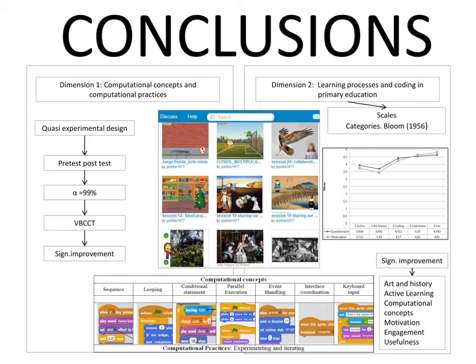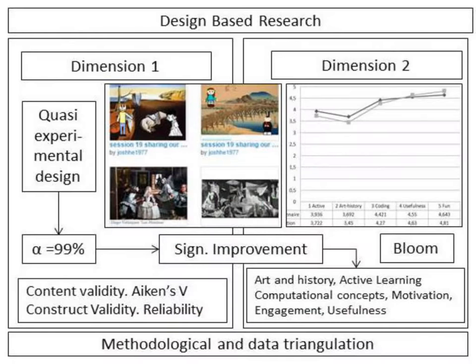Finding 3: Perceived usefulness in this practice and the computational concepts address obtaining considerably higher results. Finding 4: Project-based learning carried out in the intervention enables an active approach. This factor obtained values around 4, so active learning is essential and important in this process. Finding 5: The active approach gets positive results and stands out through a teaching methodology centered on the students to develop projects and creations.